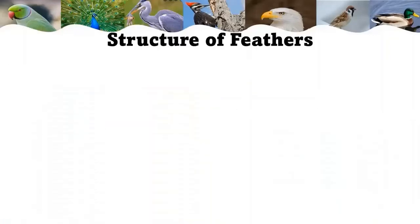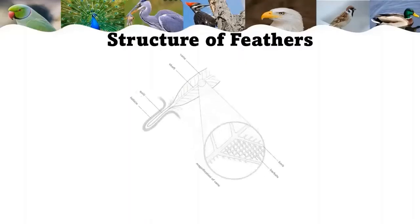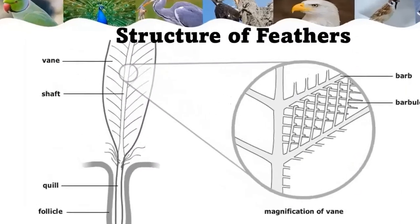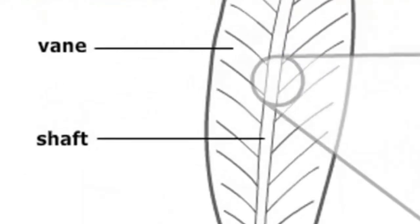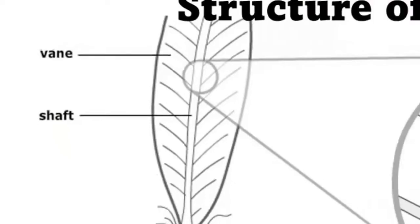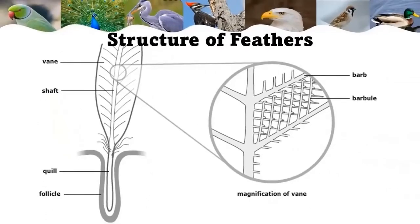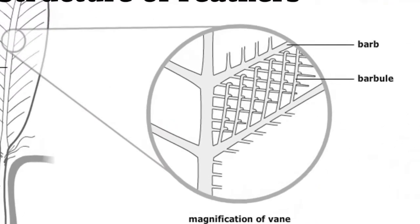Now, the structure of feathers. Feathers are made of a rough and flexible material called keratin. The spine down the middle, called the shaft, is hollow. The veins are on the two halves of the feather, and they are made of thousands of branches called barbs. Because there are many spaces between these barbs, a feather has as much air as matter.